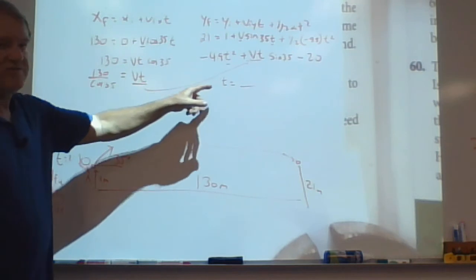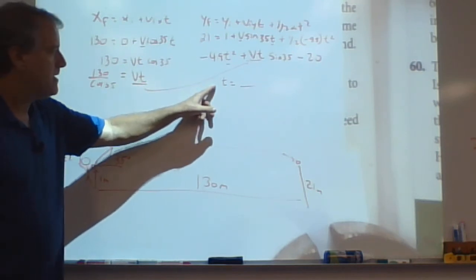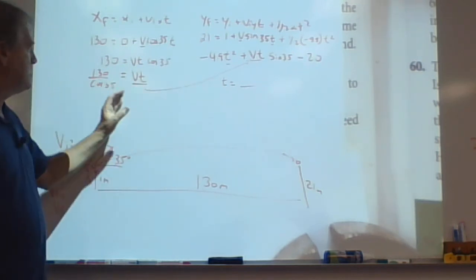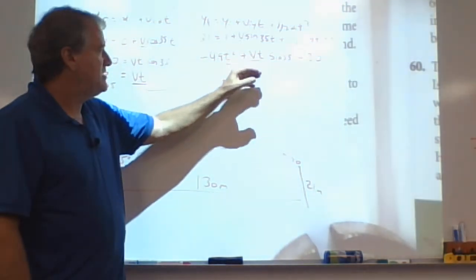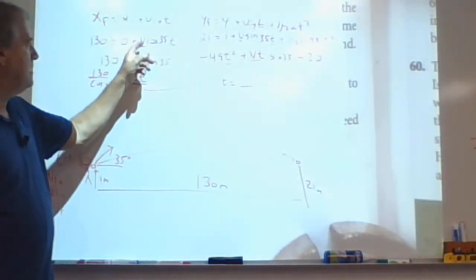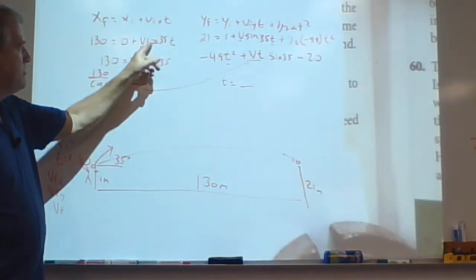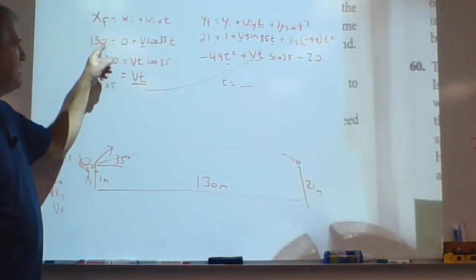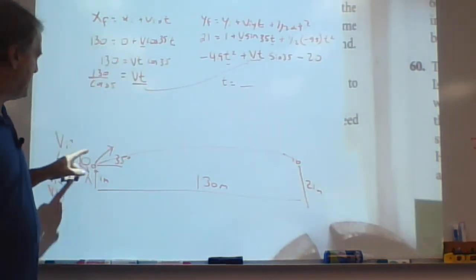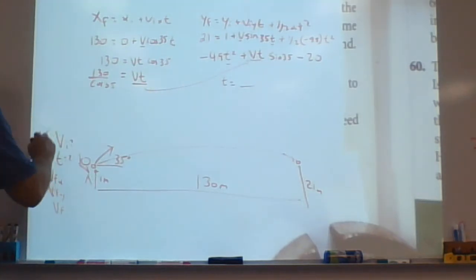So V is easy. Once you have T, do y'all see that? Substitute this answer in here for V T, solve for T. Once I know T, I'm going to plug it in here, multiply by the cosine of 35, and then divide that into 130. That gives me the V. So I've got these two solved. Ka-ching, ka-ching.